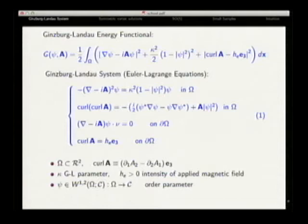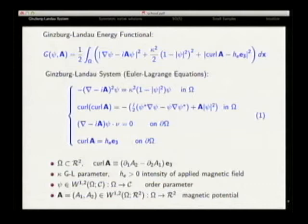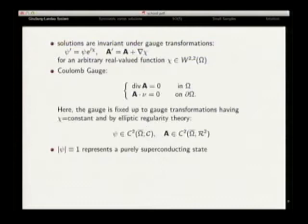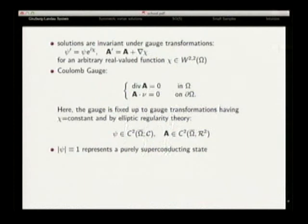Kappa, which is the Ginzburg-Landau parameter, contains all the physics of the superconductors. The magnetic field — you have an applied magnetic field — and you have an order parameter that describes the superconductor. Because of the magnetic potential, you have gauge invariance, so you can change gauge and add any arbitrary real-valued function following this transformation without changing the state of the superconductor. What we will do is pick a particular gauge where the divergence of the magnetic potential is zero and has normal component zero.